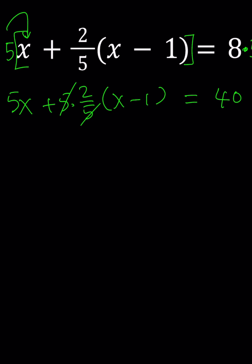Now it's fairly easy to do. We can go ahead and distribute. We get 5x plus 2x minus 2 equals 40.